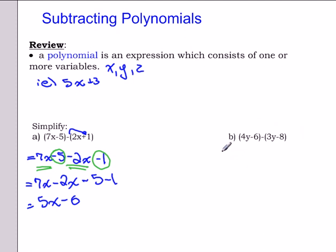Again, the first thing we need to do is remove the brackets. We're left with 4y minus 6, and we have minus 3y. We have a negative times a negative, which gives us a positive 8.